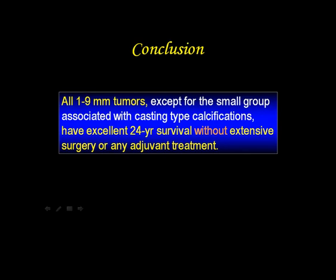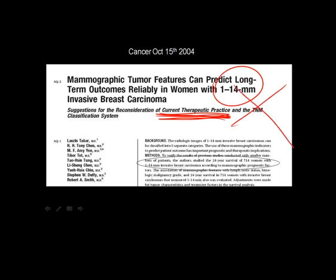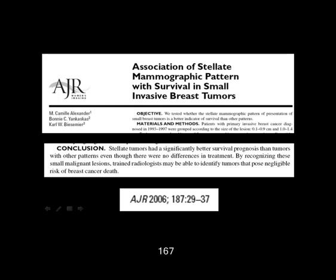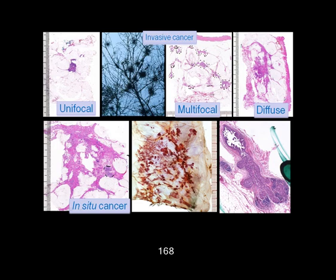Without extensive surgery and adjuvant treatment — why do we irradiate every breast cancer? No need. Ten years ago we begged people: please change the TNM classification, since it's so outdated — it was written well before we started screening and reconsidered the current therapeutic treatments. We got some confirmation from the United States, and I'm looking forward to getting confirmation from you. You have two million examinations.